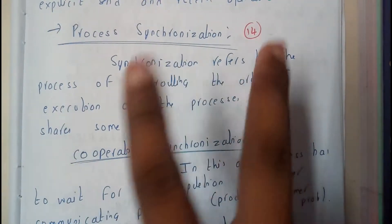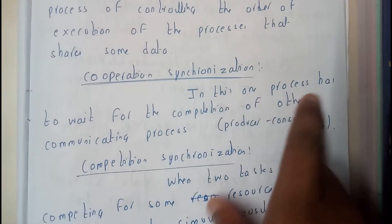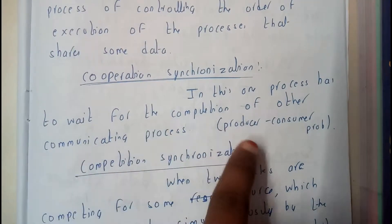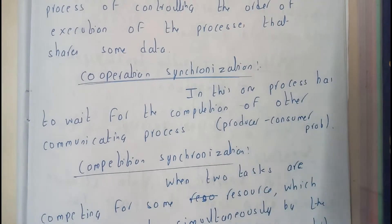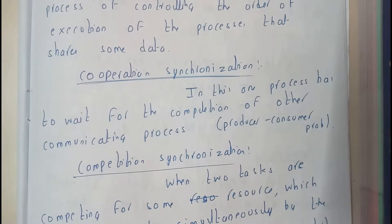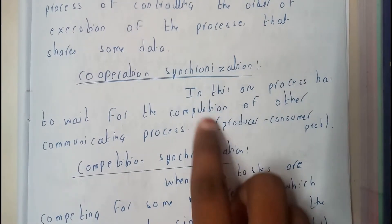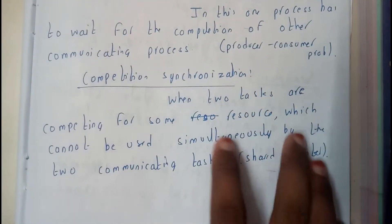This is divided into two types. The first is cooperation synchronization, where one processor has to wait for the completion of another processor. This is similar to the producer-consumer problem — only if the producer produces something can the consumer receive it, once the producer has completed.